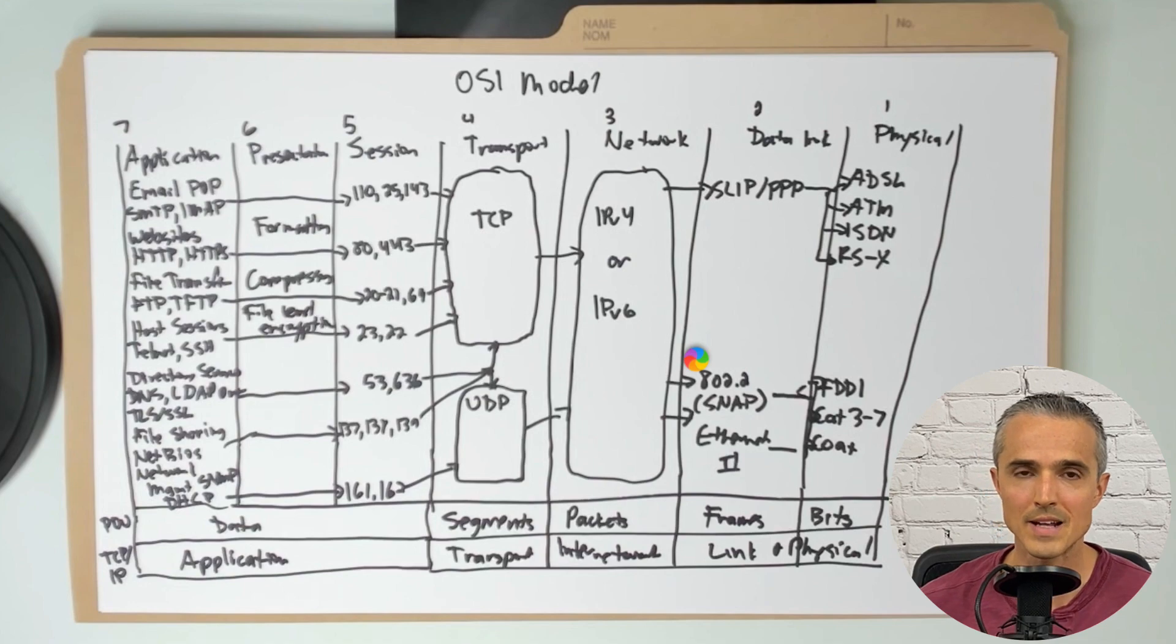Under the bottom of layer 2 and that swim lane, we have 802.2 SNAP, sub-network access protocol for multiplexing. Ethernet 2, which is baseband or digital, not analog. And those deliver bits through fiber distributed data interface for fiber optic connections or CAT 3 to 7 cables, the ones we see plugged into our computers. And then there's coax cables that we see plugged into some home modem routers.